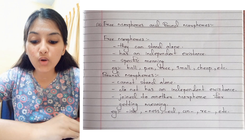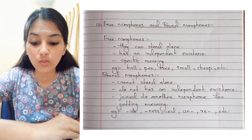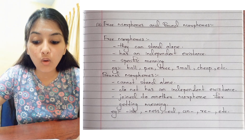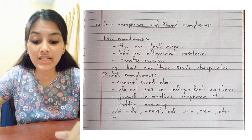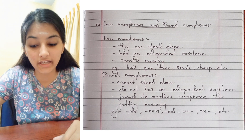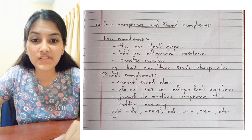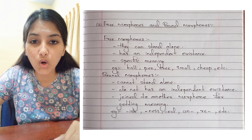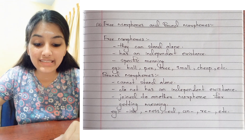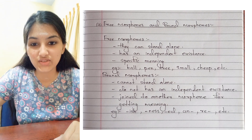Free morphemes and bound morphemes. Free morphemes are those morphemes which can stand alone, or which have an independent existence with a specific meaning. Examples: ball, pen, tree, small, cheap, etc.